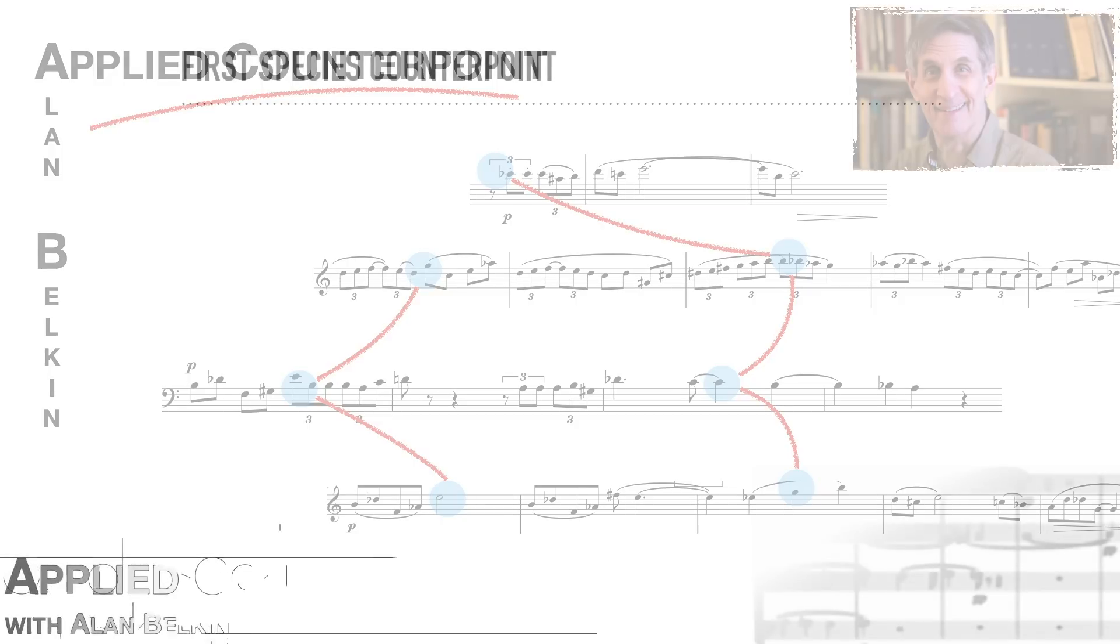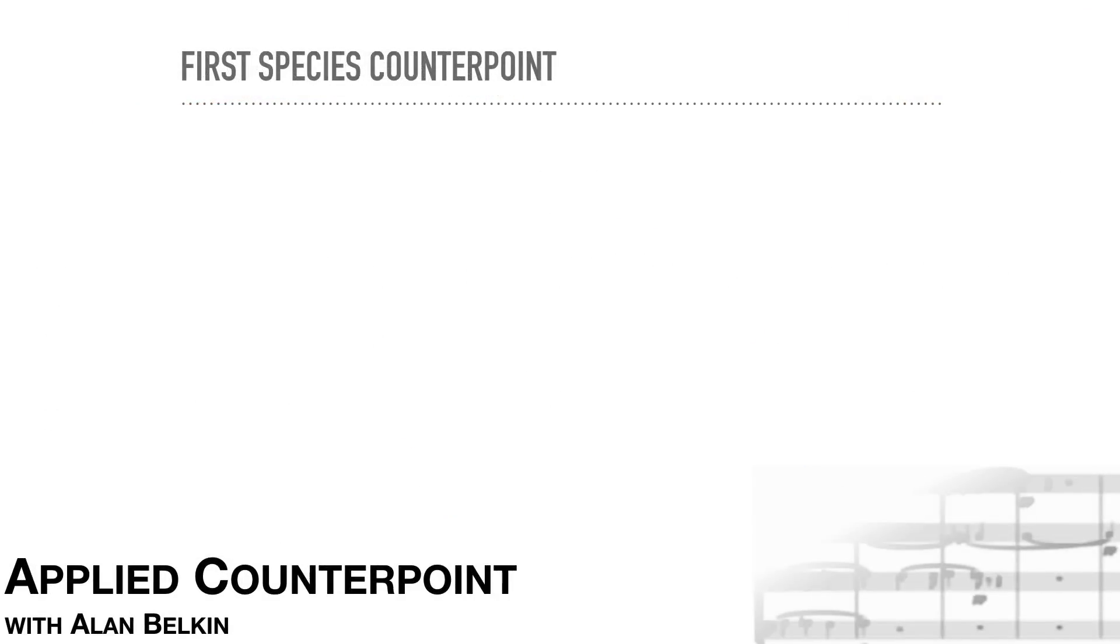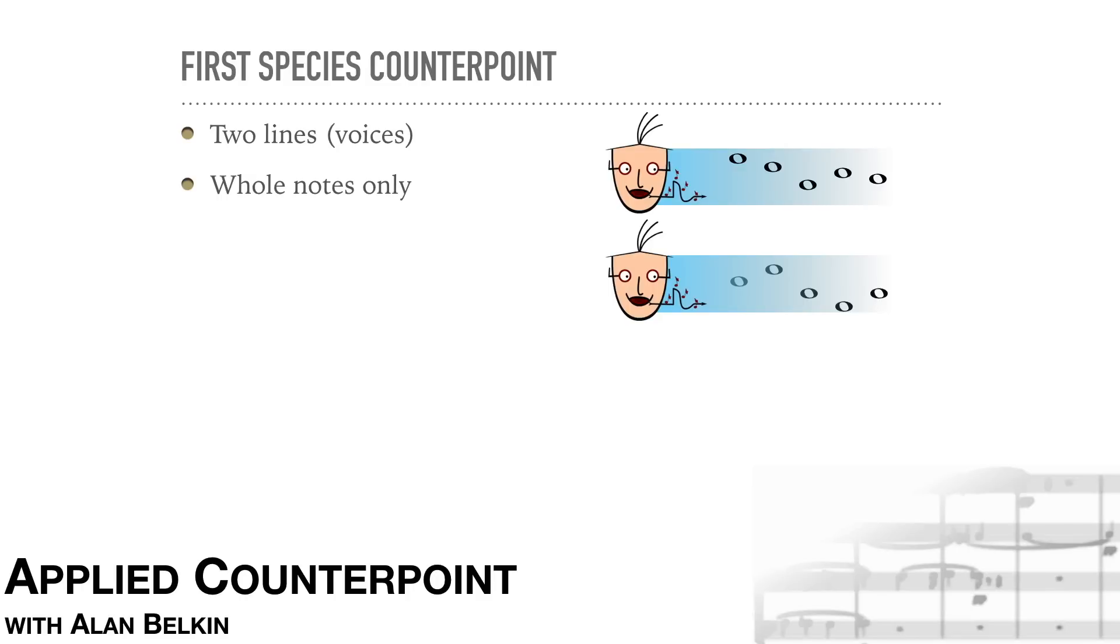Let's begin with First Species Counterpoint. We'll start with the simplest situation, only two lines at a time to consider, both in whole notes. There is no rhythmic independence at all between them. Furthermore, there'll be no dissonances at all. The only thing which can distinguish the two lines at this point is their respective contours and ranges.